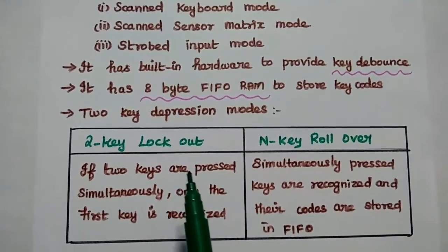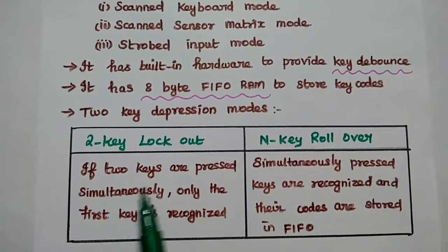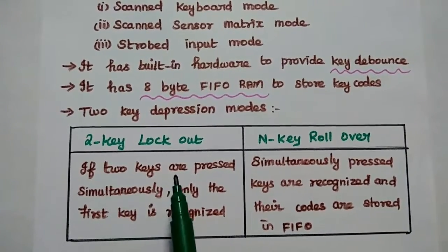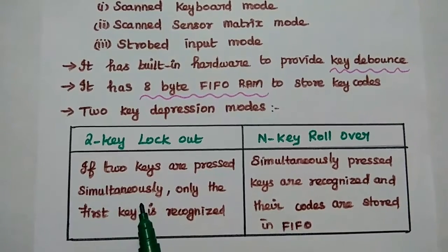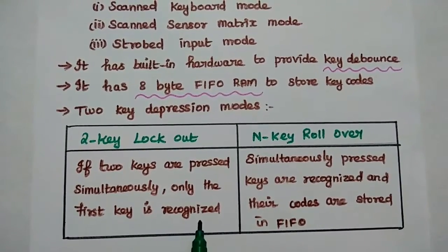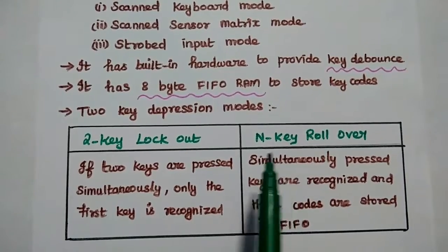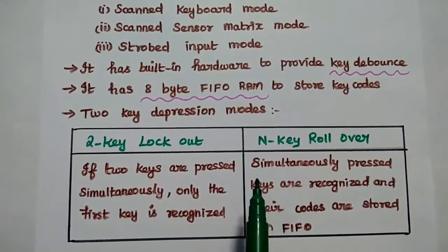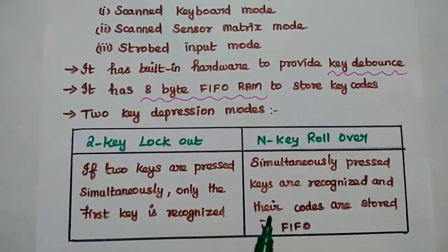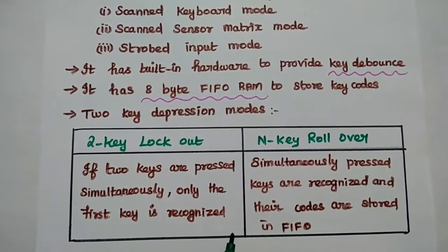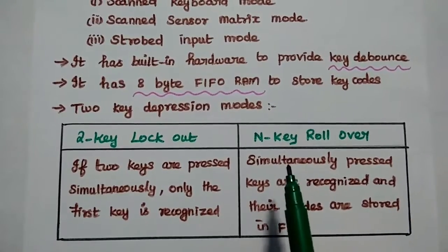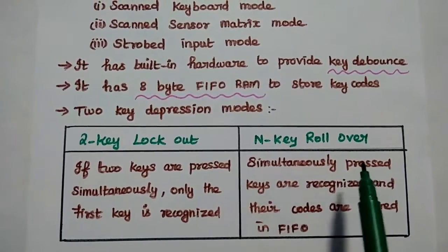The major difference between these two methods is: in 2-key lockout, if two keys are pressed simultaneously, only the first key is recognized. But in N-key rollover, simultaneously pressed keys are all recognized and their codes are stored in the FIFO. We can prefer the N-key rollover method.